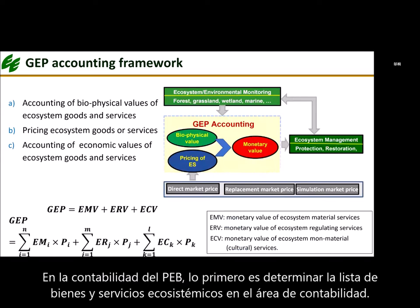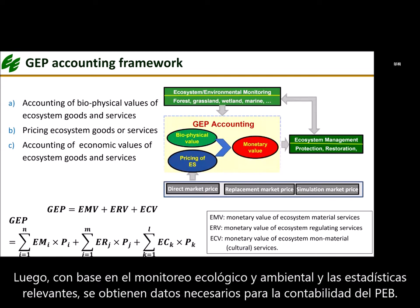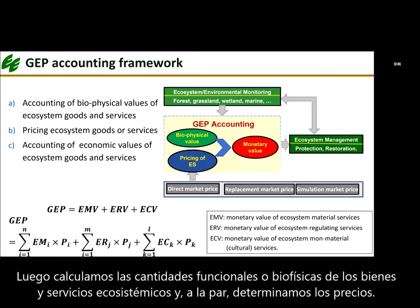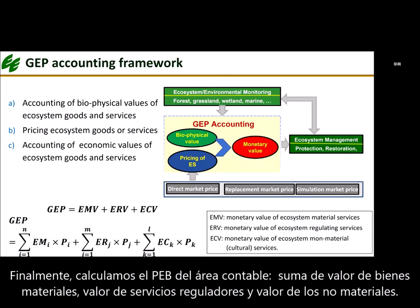In GEP accounting, the first step is to determine the list of ecosystem goods and services in the accounting area. Then, based on ecological and environmental monitoring and statistics from relevant sources, we obtain the necessary data. Next, we calculate the functional or biophysical quantities of ecosystem goods and services and determine their associated prices. Finally, we calculate the accounting area's GEP, which is the sum of material goods value (EMV), regulating services value (ERV), and non-material services value (ECV).